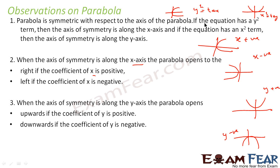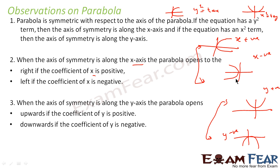To summarize: if the equation is y² = 4ax, the parabola is symmetric along the x-axis. If it is x² = 4ay, it is symmetric along the y-axis. If x is positive, the parabola opens to the right; if x is negative, it opens to the left. If y is positive, it opens upward; if y is negative, it opens downward.